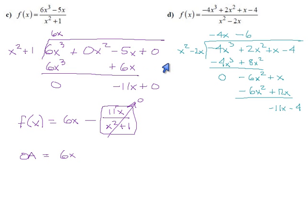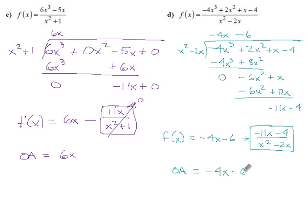And that's the end of the line because x squared cannot go into a term that's only degree 1. So, for this one, our function is equivalent to minus 4x minus 6. And then, plus our remainder is negative 11x minus 4 over x squared minus 2x. This part will vanish because it's divided by a power of x. And so, our oblique asymptote will have the equation minus 4x minus 6.